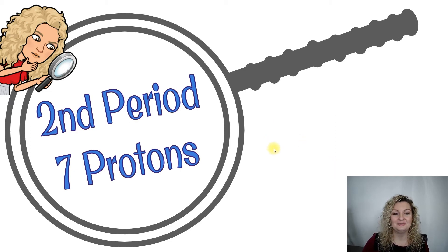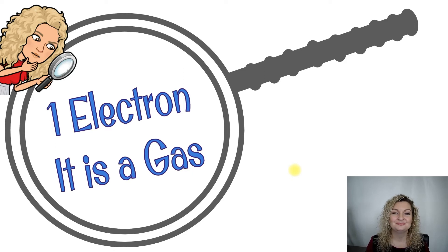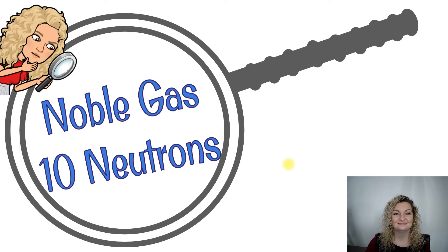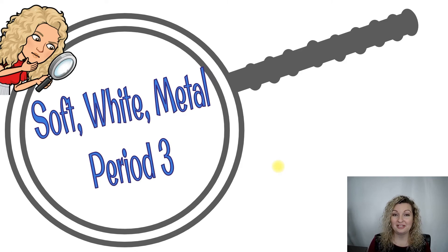Here we go. The next one has one electron and it is a gas. Pause here. Next one: a noble gas and it has 10 neutrons. Pause. Next one: a soft white metal and it's in period three.